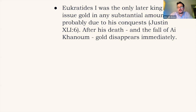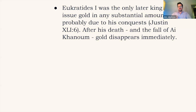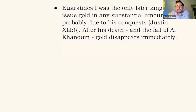Among the later kings, the only one in Bactria who issued gold in any substantial amount was Eucratides, who fought many wars in all directions. His coins have been found in Iran and further west, imitated in Babylonia — he apparently had access to gold. The moment Eucratides died and the moment Ai Khanoum was plundered and razed to the ground, gold disappears forever from Bactria — not a single gold coin among the later kings. This speaks in favor of the idea that the Bactrians took their gold from Sogdiana in the north.